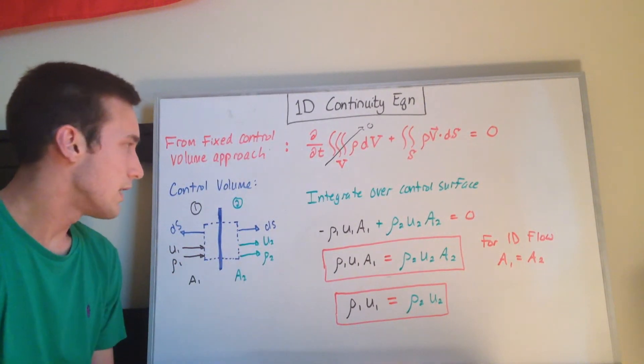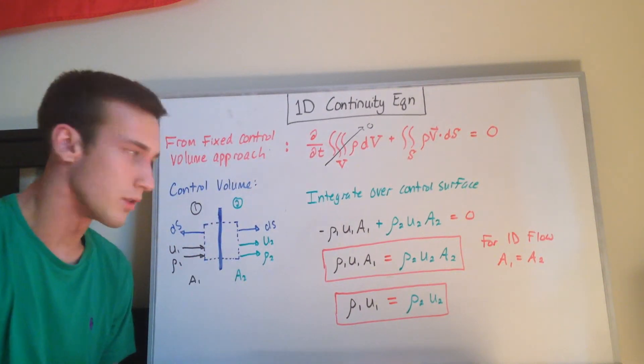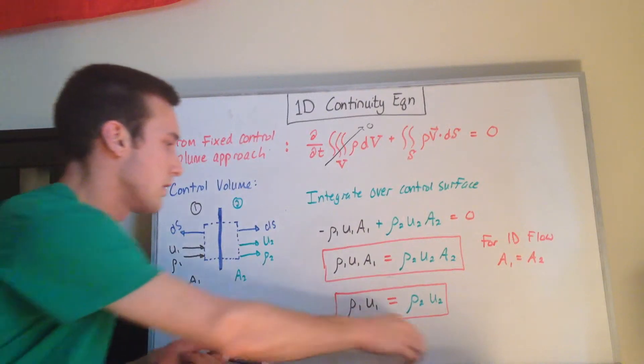So you might ask what's happening to the top and the bottom surfaces of this control volume, because they're still there.